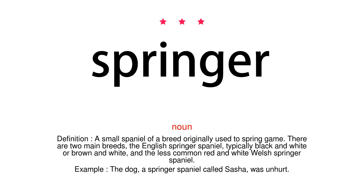Springer. Noun. Definition. A small spaniel of a breed originally used to spring game.